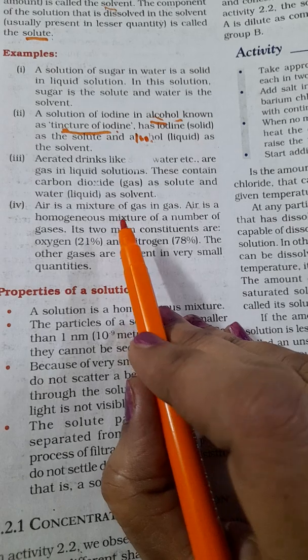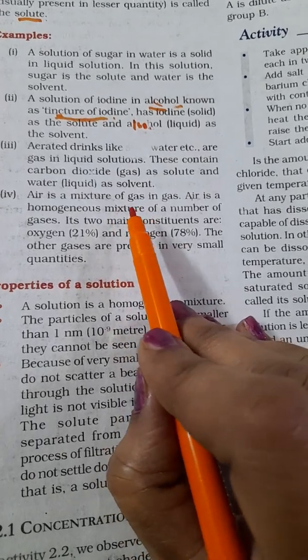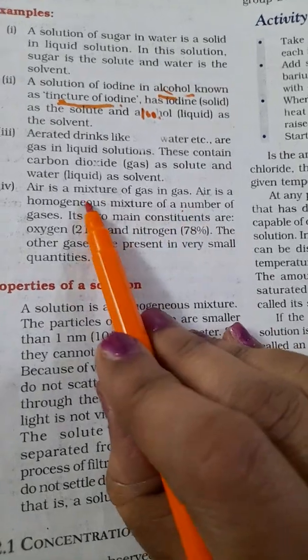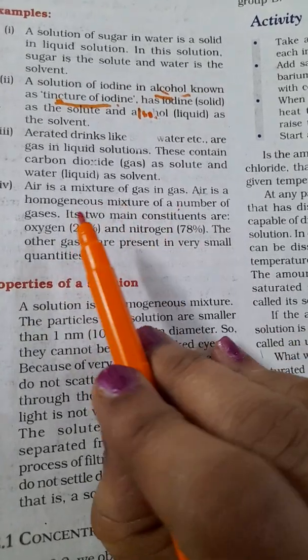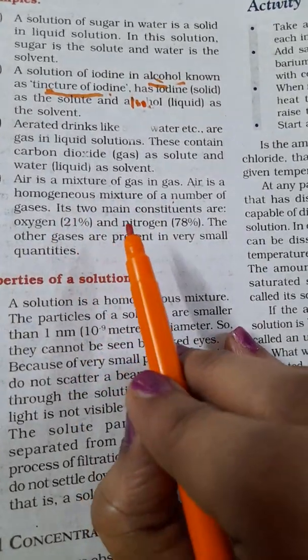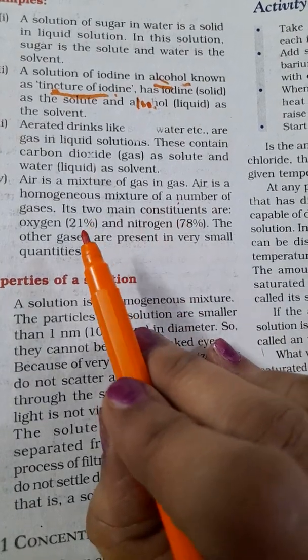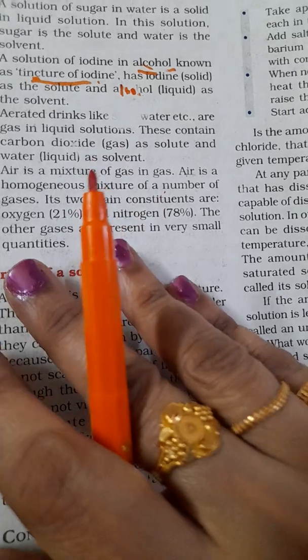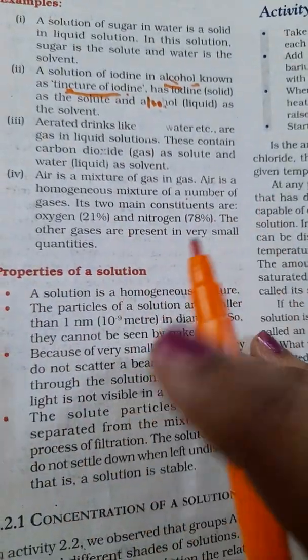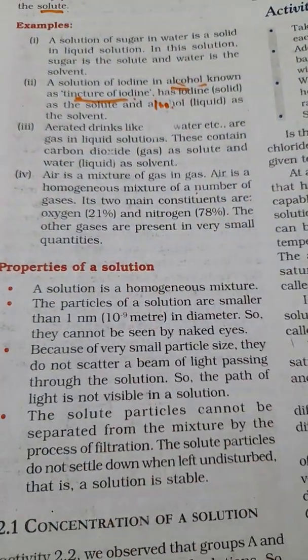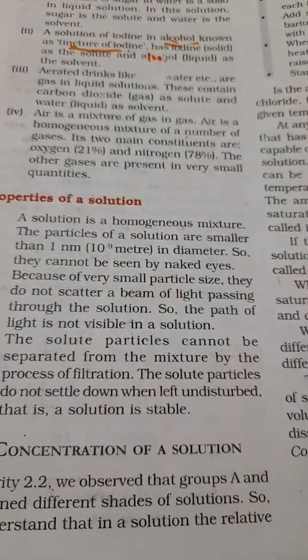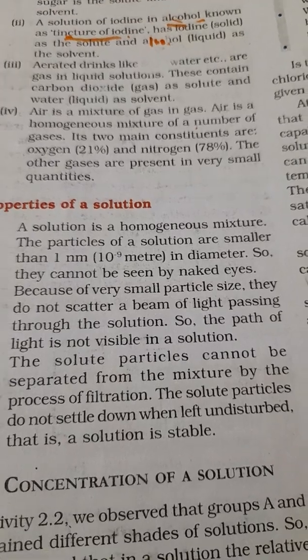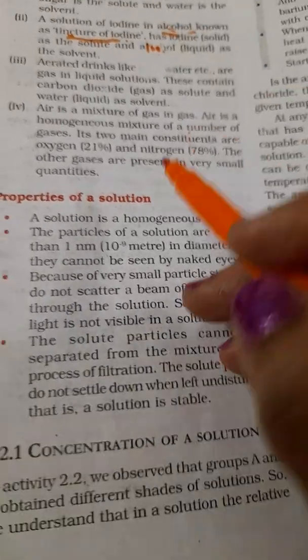Air is a mixture of gas in gas, that is a homogeneous mixture. So many gases are there in air but main two constituents of air are oxygen 21% and nitrogen 78%, and there are other gases also which are present in air in very small quantities.